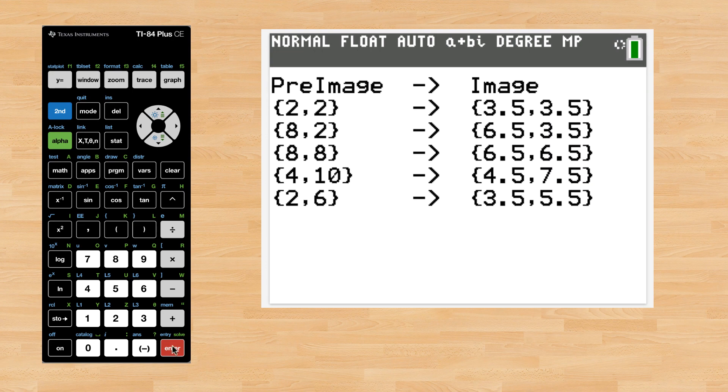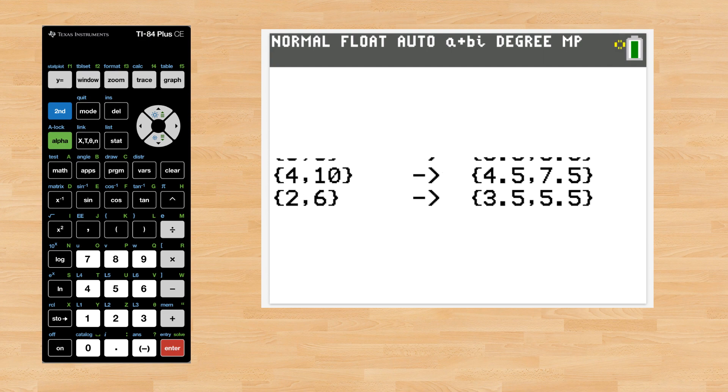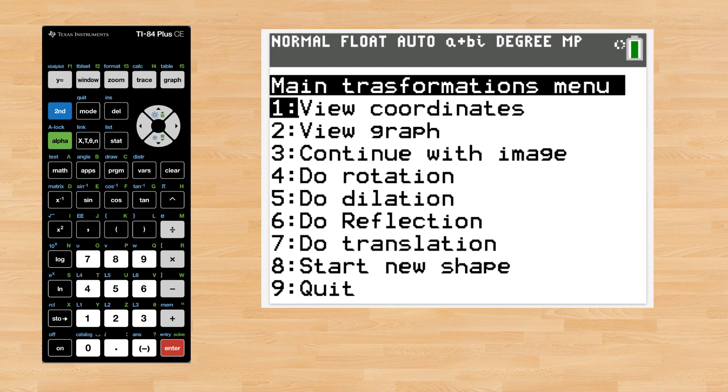Let's do one more composition by dilating the image by a factor of negative 1 through the origin.